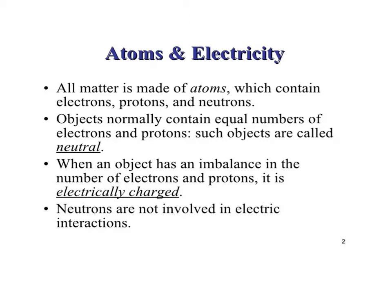You know all matter is made up of atoms which contains electrons, protons and neutrons. Protons and neutrons are inside the nucleus and outside the nucleus electrons are there. Objects normally contain equal number of electrons and protons.